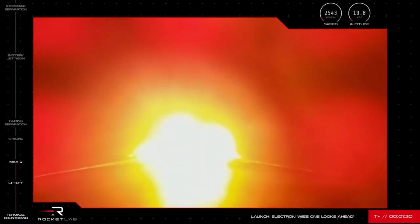The nine Rutherford engines on Electron's first stage are performing well and we're ready for the next series of milestones in the launch process. Up next is main engine cutoff, known as MECO, which immediately precedes stage one separation.